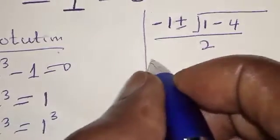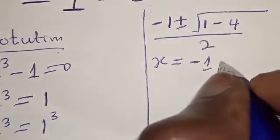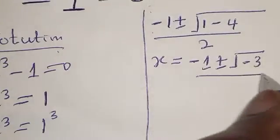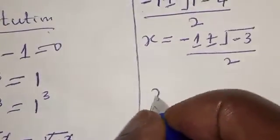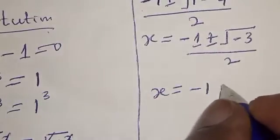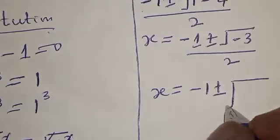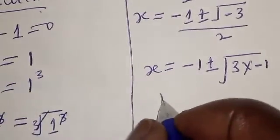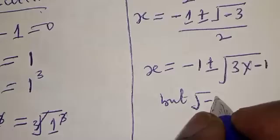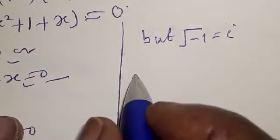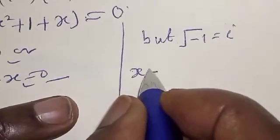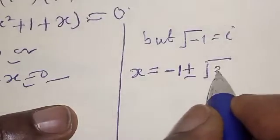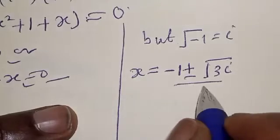We have s equal to minus 1 plus or minus square root of negative 3, over 2. The square root of negative 3 can be expressed as the square root of 3 multiplied by negative 1. Since the square root of negative 1 is equal to i, our equation becomes s equal to minus 1 plus or minus root 3 times i, over 2.